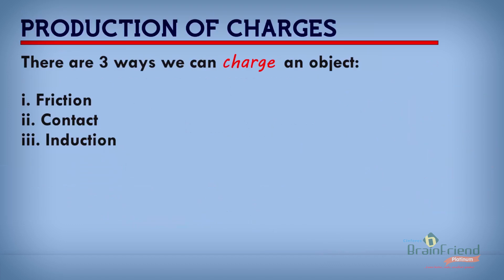There are three ways in which we can produce electrostatic charges. One way is through friction, another way is through contact, and we also have the method of induction. Three ways to produce charges — we are going to take a look at each one of them individually.